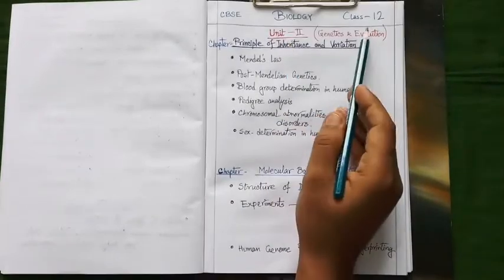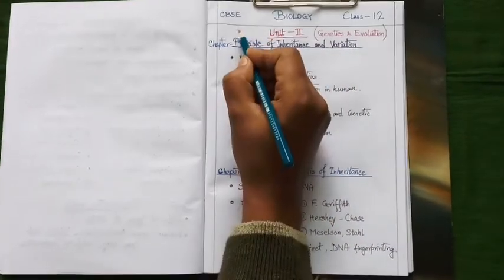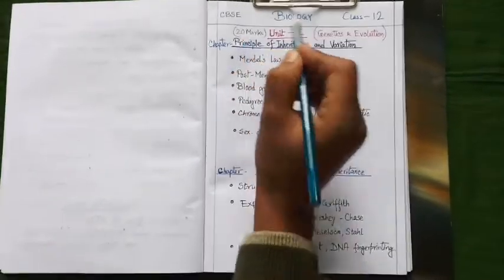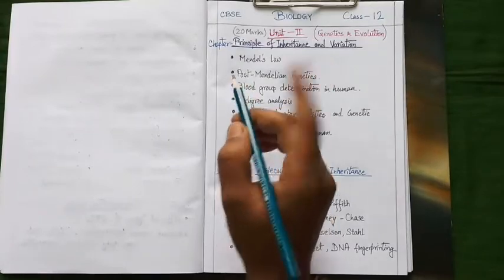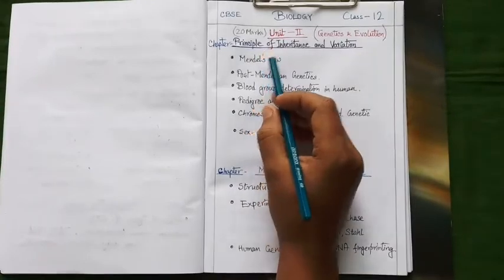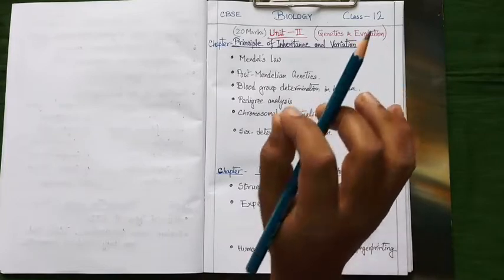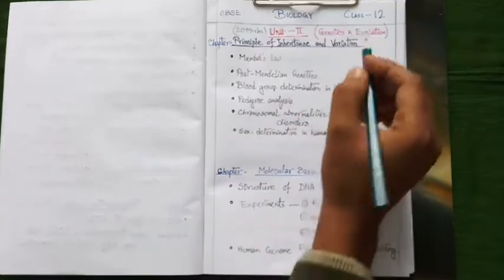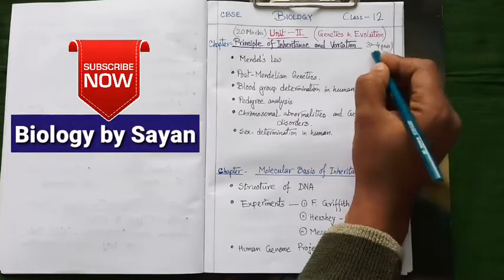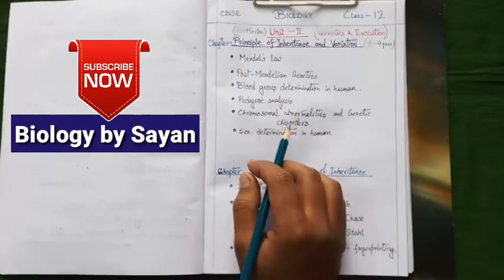Our second unit of class 12 biology is genetics and evolution. Total 20 marks of question will appear in exam from this unit. So this unit is very important. Our first chapter under this unit is principle of inheritance and variation, the pure genetic chapter. And this chapter is also very important because you may easily expect three to four questions from this single chapter in the exam.